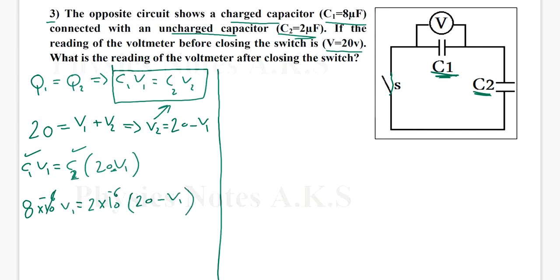Now I can delete the 10 to the power negative 6 with 10 to the power negative 6. I can also divide both sides by 2. So it's going to be 4 V1 equals 20 minus V1. I hope you understood what happened here. I divided here by 2 and here by 2.